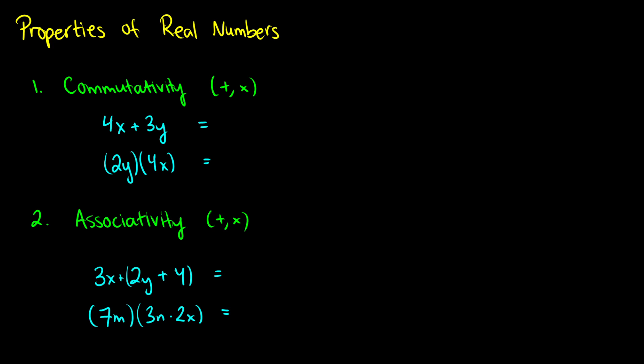Commutativity means that you can switch the order of whatever you're adding or multiplying — this works with addition or multiplication. For instance, if we have the formula 4x plus 3y, it doesn't matter whether we add 4x plus 3y or change the order to 3y plus 4x; the result comes out the same. Without variables, we know that 2 plus 3 is exactly the same as 3 plus 2 — both are 5. You can think of each number as commuting to a different location.